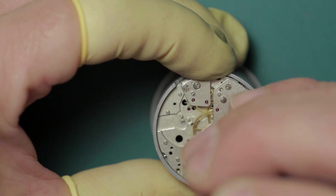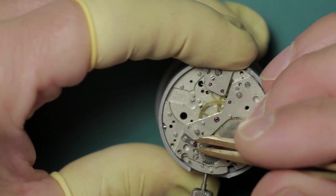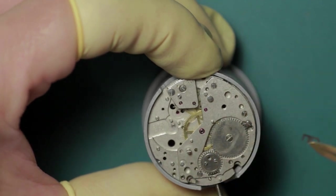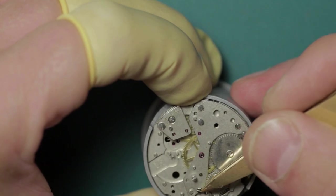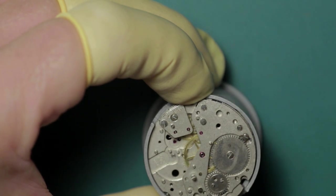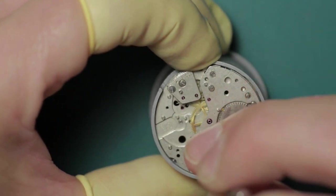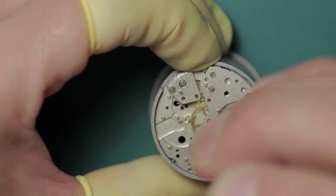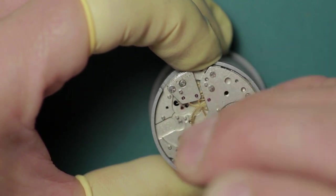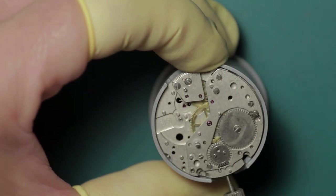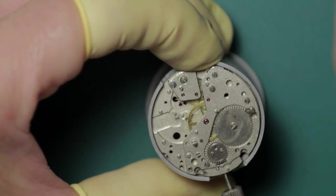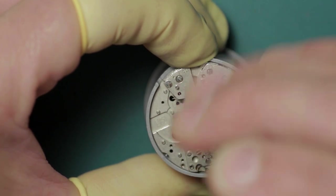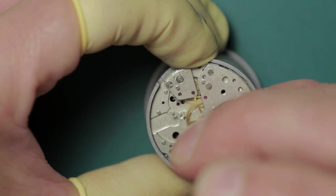This last piece here is the minute recorder jumper spring. I did at one time have a habit of leaving these on when they went through the cleaning cycle, but some of the vintage watches, not so much the Valjoux but the Venus and the Landeron in particular, use incredibly fragile minute recorder jumper springs. I have in the past damaged a couple of them by leaving them in place in the cleaning machine, so I tend to remove them and clean them by hand carefully now.